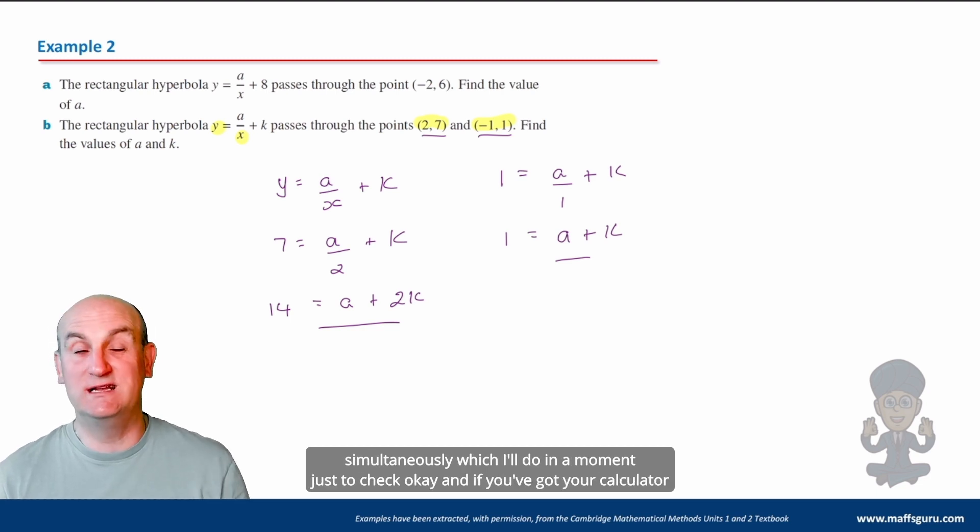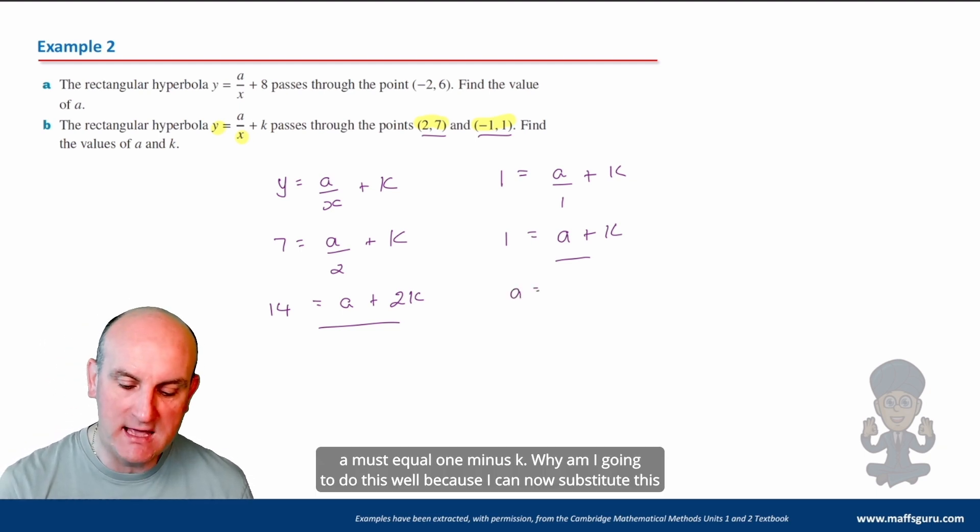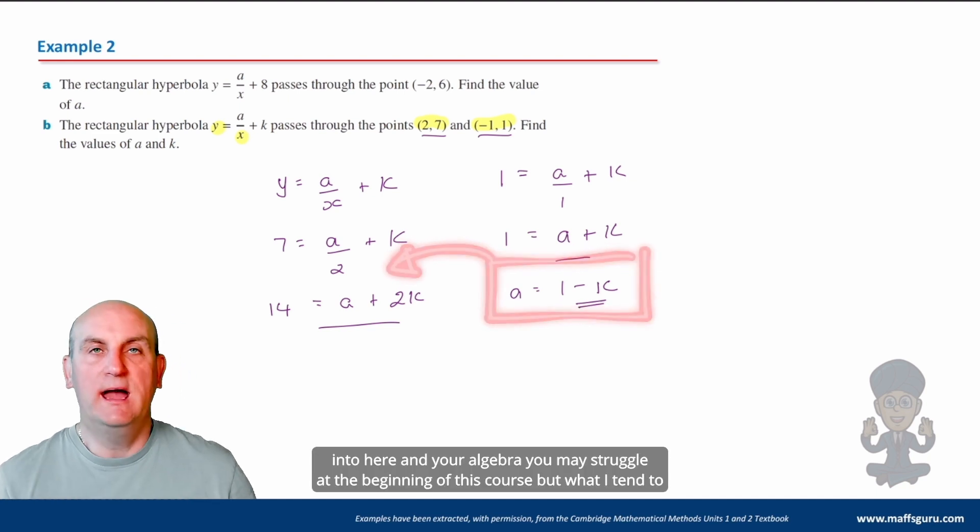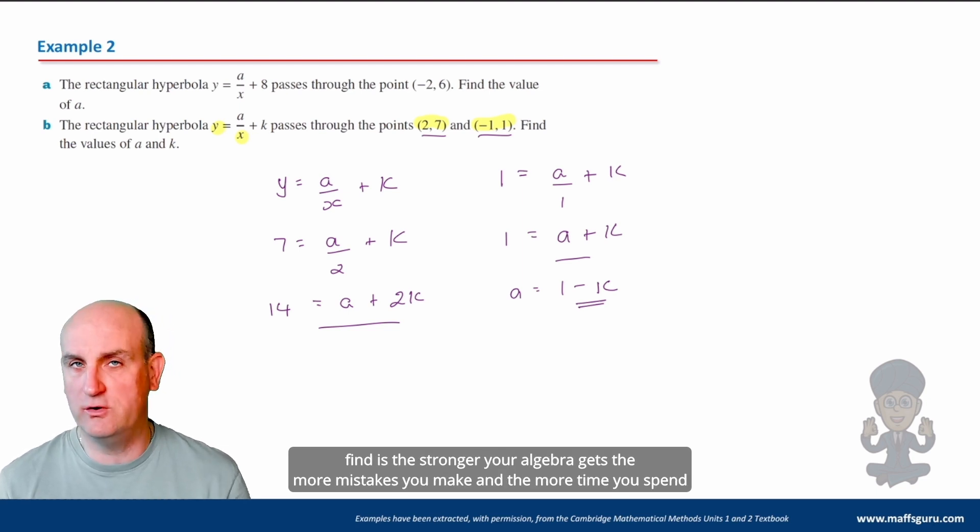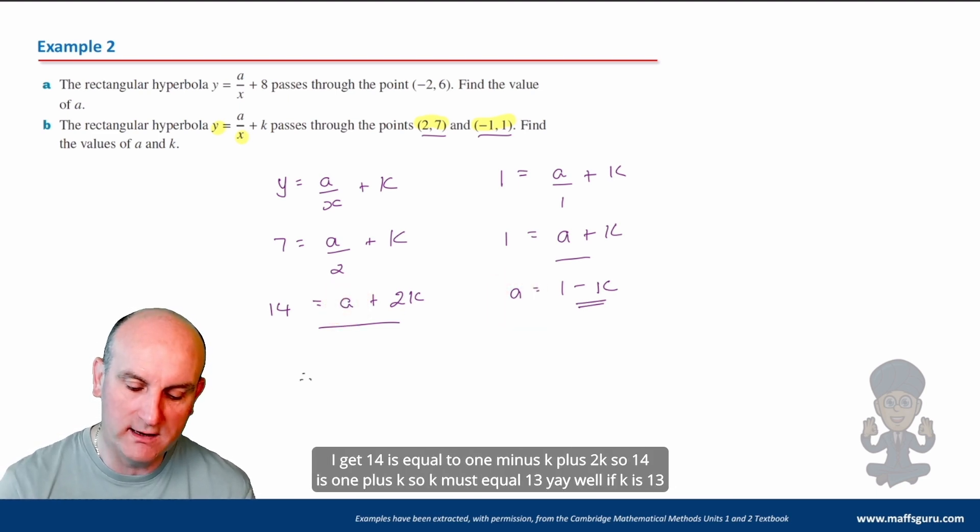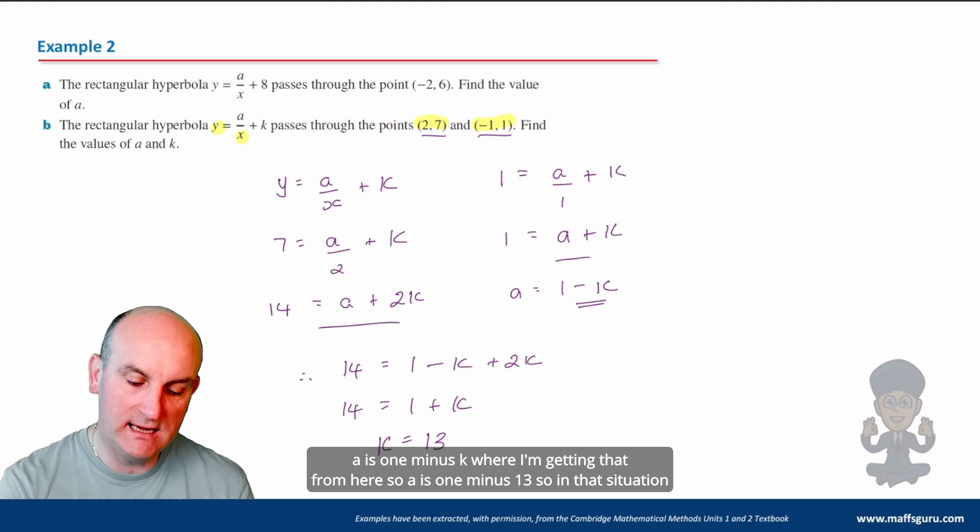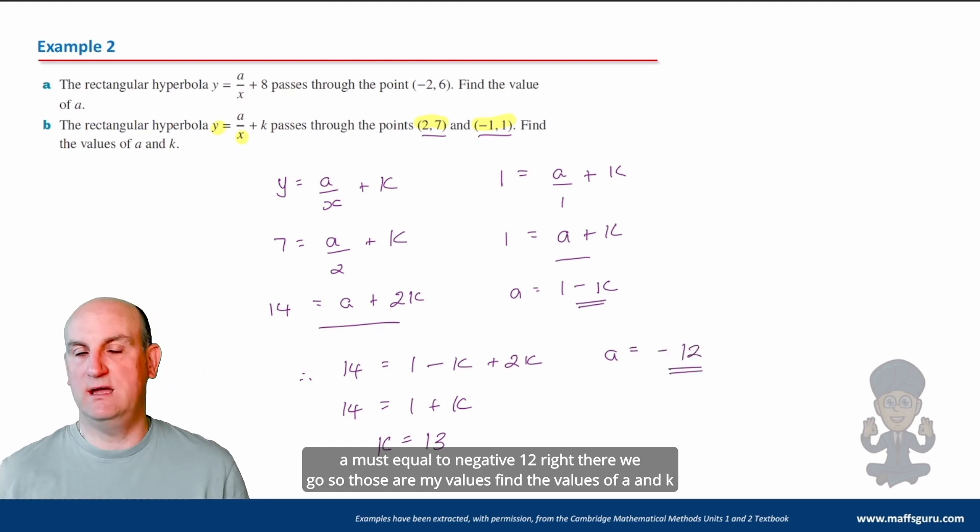So I've got 1 is equal to a/(x), which is 1 plus my value of k. Multiply everything through by 1. We don't even really need to do that, do we? So we now know that 1 is equal to a plus k. All right. What can I do? Well, I could fire up my calculator and solve it simultaneously, which I'll do in a moment just to check. And if you've got your calculator, always a good idea to check. But what I now know is that I can rearrange this and say, well, okay, a must equal 1 minus k. Why am I going to do this? Well, because I can now substitute this into here. And your algebra, you may struggle at the beginning of this course, but what I tend to find is the stronger your algebra gets, the more mistakes you make and the more time you spend there going, why, why, why, the quicker you'll get as you go through the year. I promise. So what I'm going to do now is I know that a is 1 minus k. So I'm going to substitute that in there. So therefore, I get 14 is equal to 1 minus k plus 2k. So 14 is 1 plus k. So k must equal 13. Yay. Well, if k is 13, a is 1 minus k, where I'm getting that from here. So a is 1 minus 13. So in that situation, a must equal negative 12. Right. There we go. So those are my values. Find the values of a and k. I'd make that clear for my examiner to make sure. And the working out has to be shown, right? And again, that's very dependent.